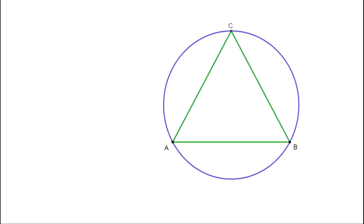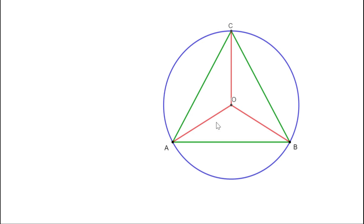Let us see what is special about a chord which is a side of an equilateral triangle. Let us join the vertices of this triangle to the center of the circle. Now look at these two triangles: triangle ACO and triangle ABO. These two sides are equal because they are sides of the equilateral triangle. The other two sides of each triangle are equal because they are radii of the circle. That means the three sides of one triangle are equal to the three sides of the other triangle. Therefore the two triangles are equal.